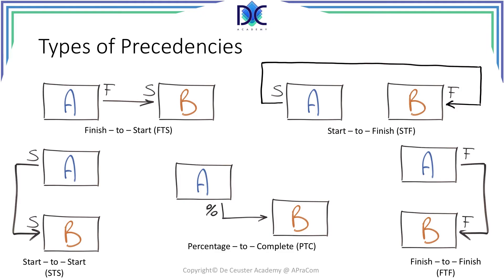There are four types of precedences which have been defined in the Project Management Body of Knowledge: a finish-to-start relationship, a start-to-start, start-to-finish, and finish-to-finish. Let's start with the finish-to-start relationship. It means that task B can only start when the predecessor A is finished. When there are more predecessors, B can only start when all predecessors have been finished. The finish-to-start relationship is one of the most common relationships between activities, and it is also the one used in this class, because it's the easiest one to work with.